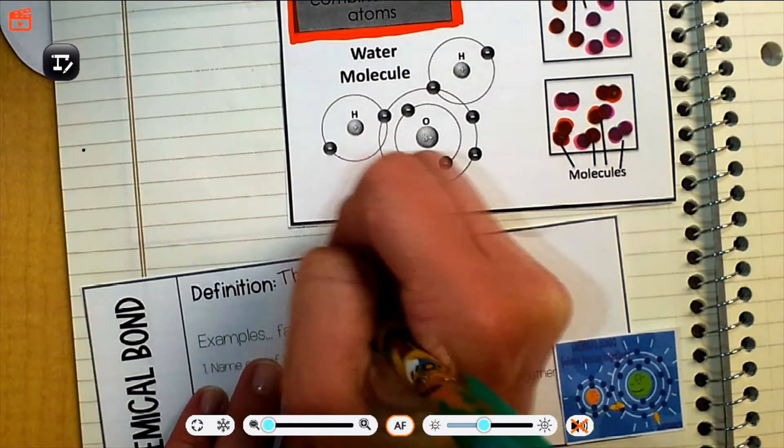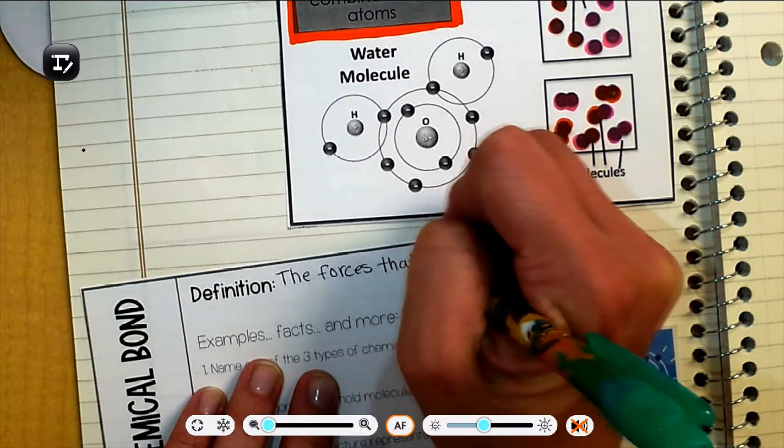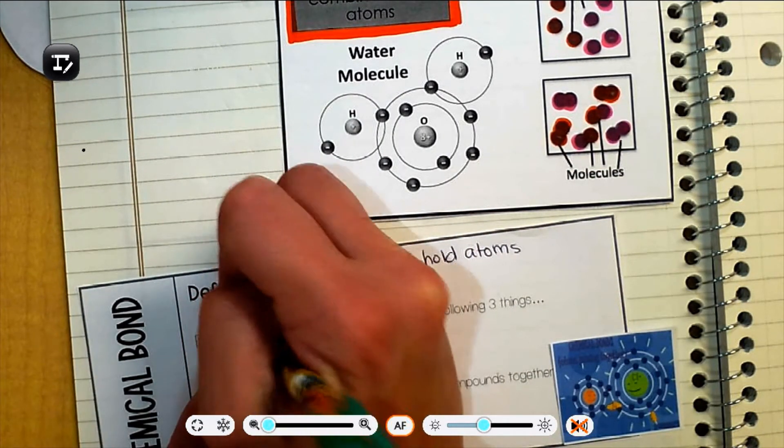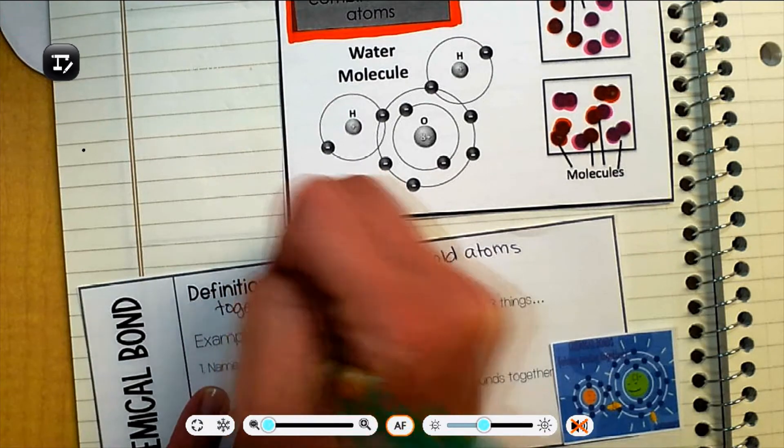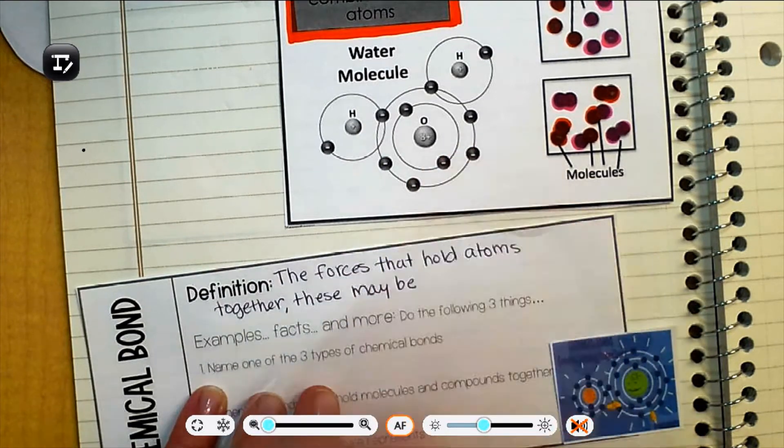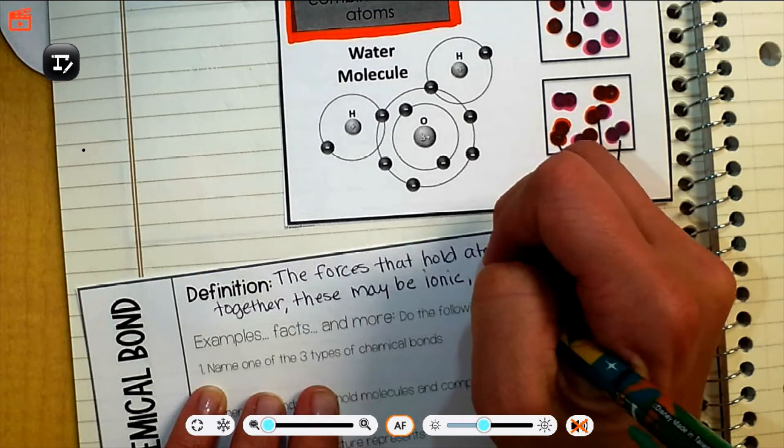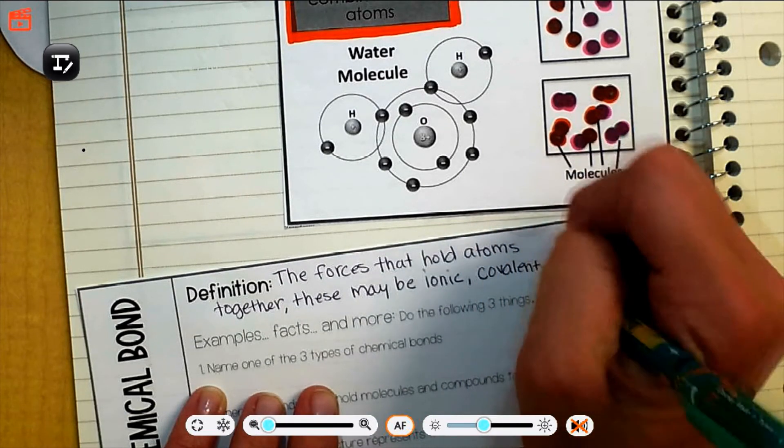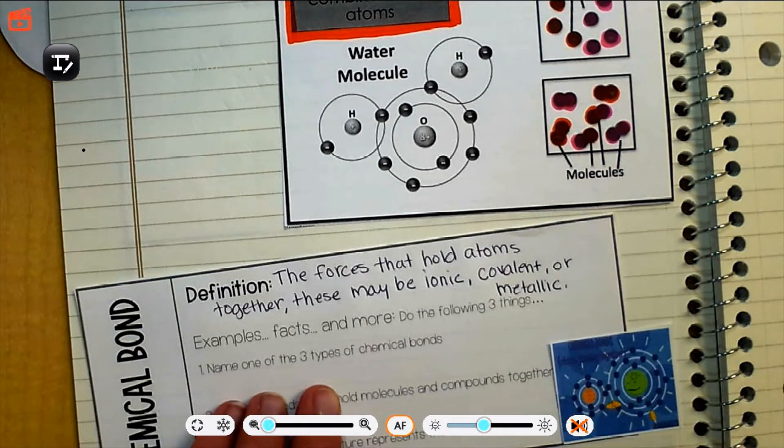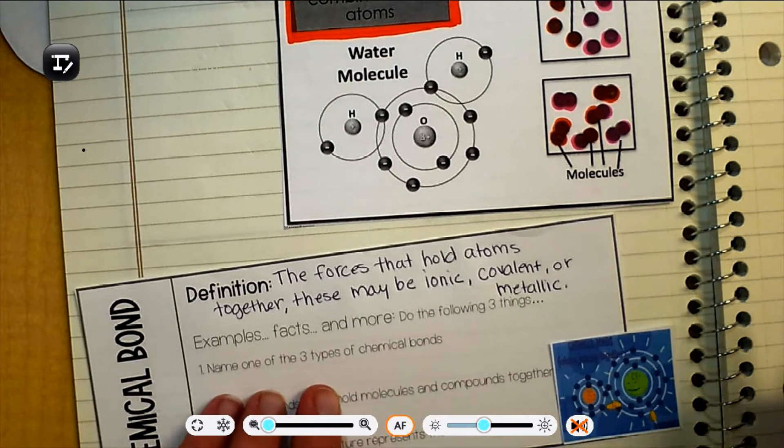Okay, so our definition for chemical bond. The forces that hold atoms together. These may be, there's three different types. Covalent, ionic. You'll talk more about these in chemistry in high school. Covalent, ionic, or metallic. So pause the video here if you need to finish my definition. So it's really important that we remember that there are three types. And right now, it's not super important that we remember the three different ones.